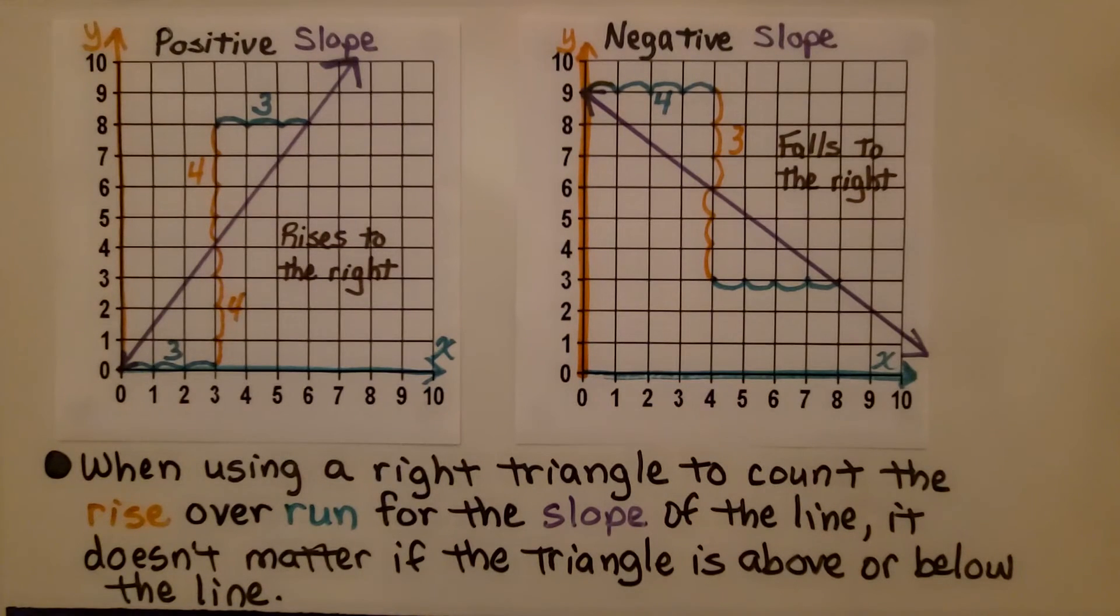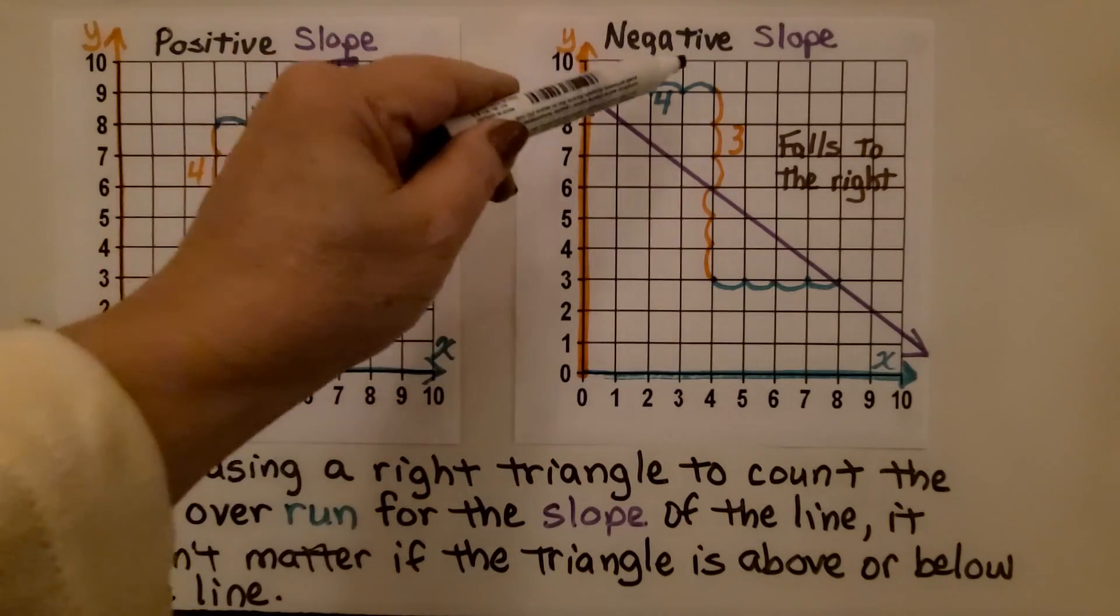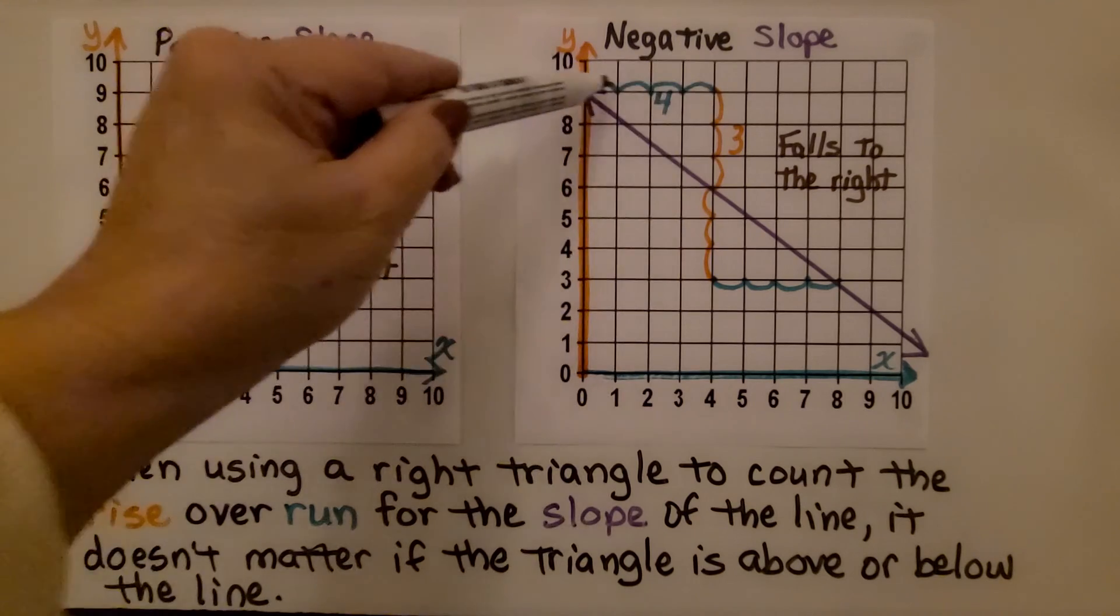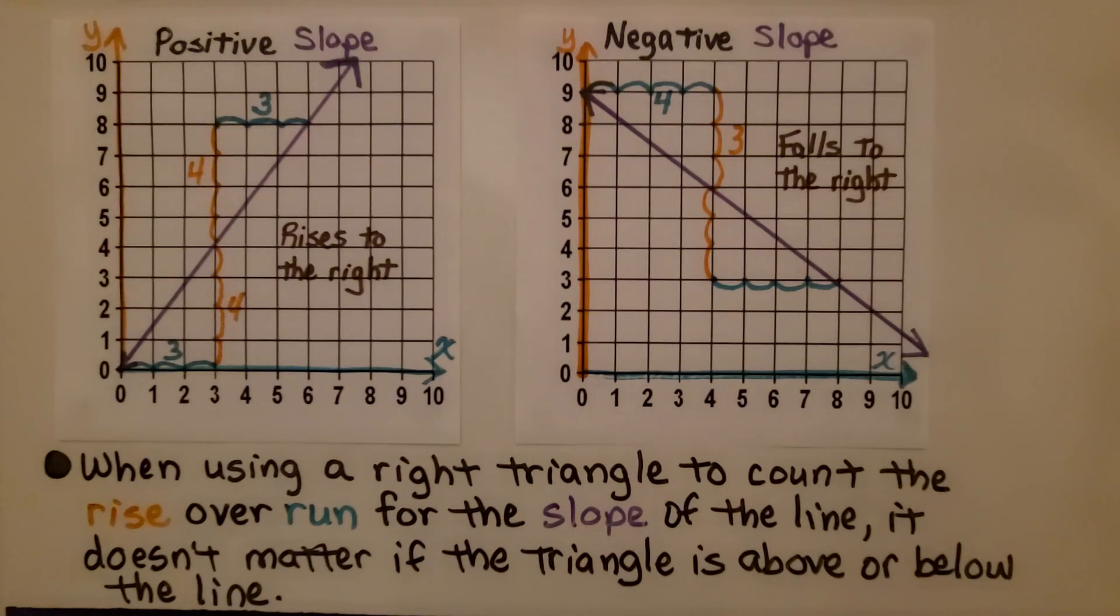And I also want you to remember when using a right triangle to count the rise over run for the slope of the line, it doesn't matter if the triangle is above or below the line. If we have a positive slope that's rising to the right, we could do our rise going above the line. We have a 4 and our run is our horizontal, that's 3 units. We could also do it below the line and do 4 over 3. So our slope is 4 thirds. And if we have a negative slope, we can do it above or below the line. Just remember, going up and down is the rise and going across is the run. We have 3 fourths for our slope.